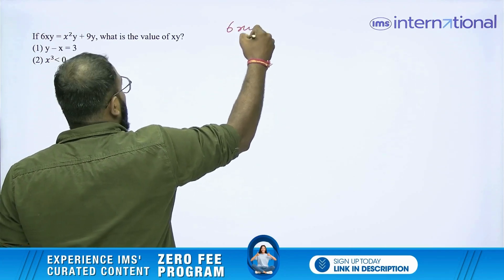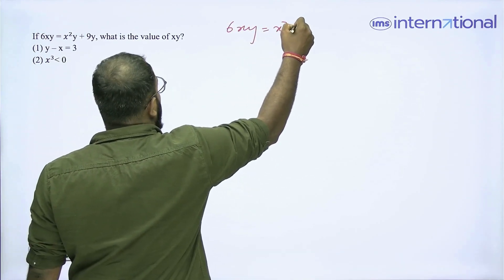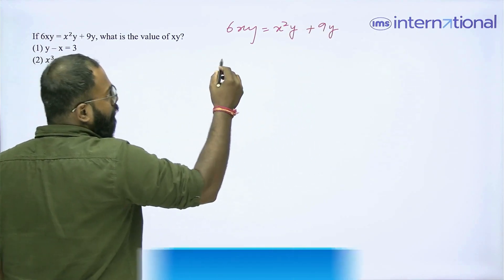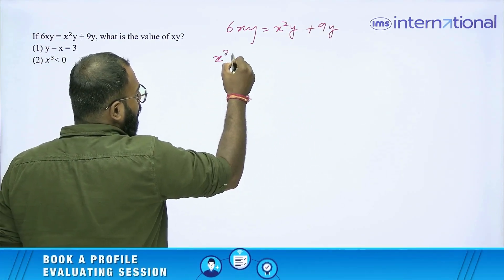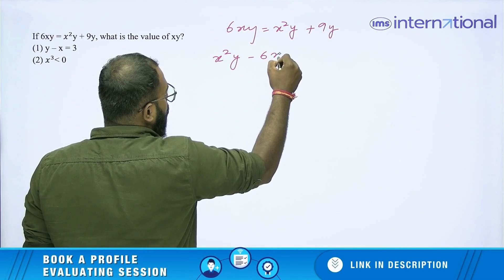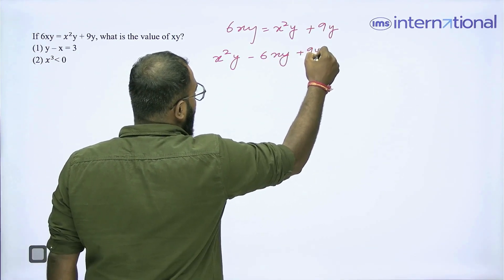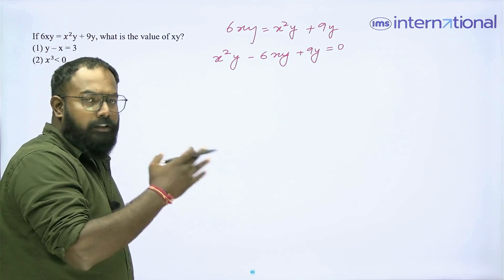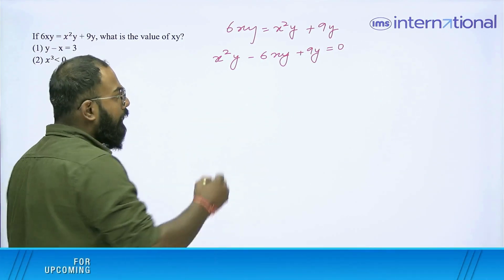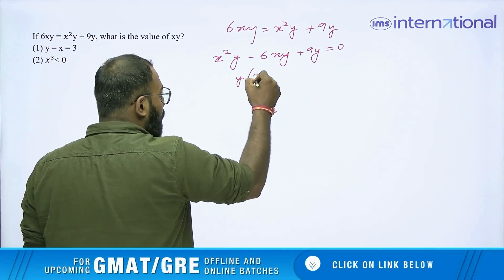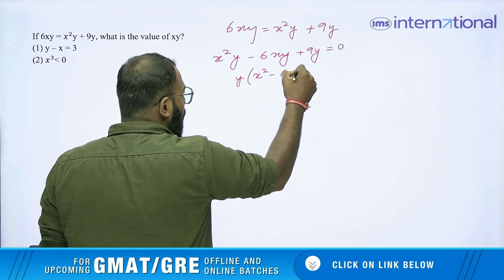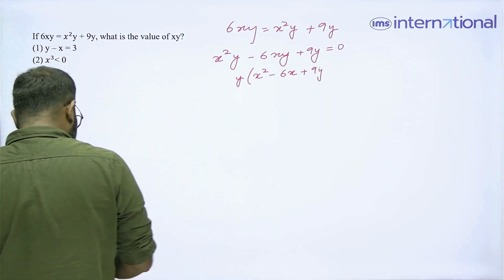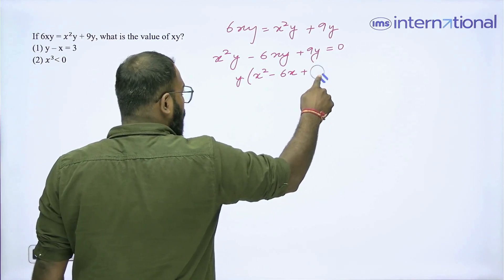6xy = x²y + 9y. So, if I take everything to one side, we can get x²y - 6xy + 9y = 0. I can see that y is associated with every term. So, I can take y in common and I will be left with x² - 6x + 9.